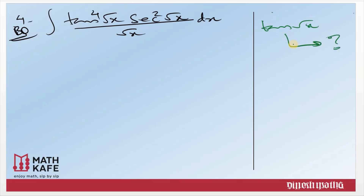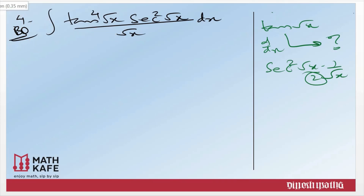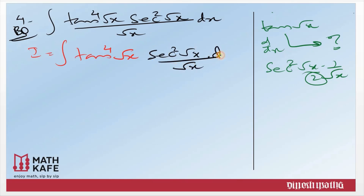Now think about the derivative of tan(√x). The derivative is sec²(√x) · (1/(2√x)). You have sec²(√x) and √x present in the question, but there is a shortage of the factor 2 — that does not matter. We have confirmed we are going to use tan(√x) as the substitution. Rewrite the question: take tan(√x) as the first term and write sec²(√x) / √x · dx as the leftover. Let t equal to tan(√x).